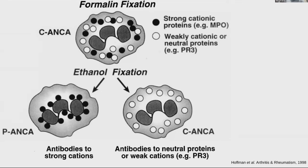For example, if you add ethanol to a neutrophil from a lupus patient, they may show P-ANCA positivity — a false positive. So you'd fix neutrophils in both ethanol and formalin to differentiate between ANA positivity versus P-ANCA positivity. Weakly cationic or neutral proteins such as PR3 stay in the cytoplasm, giving a C-ANCA pattern.